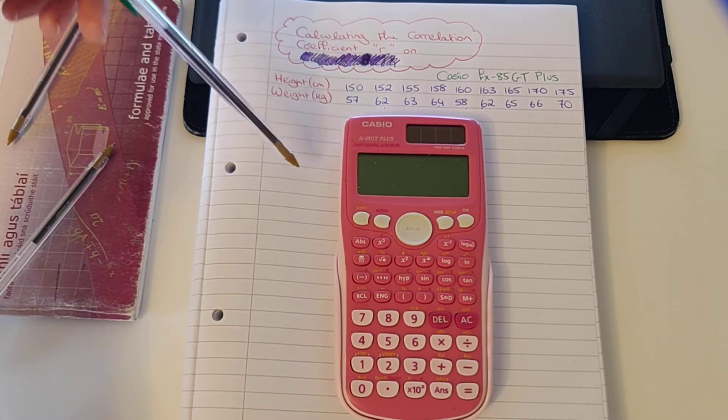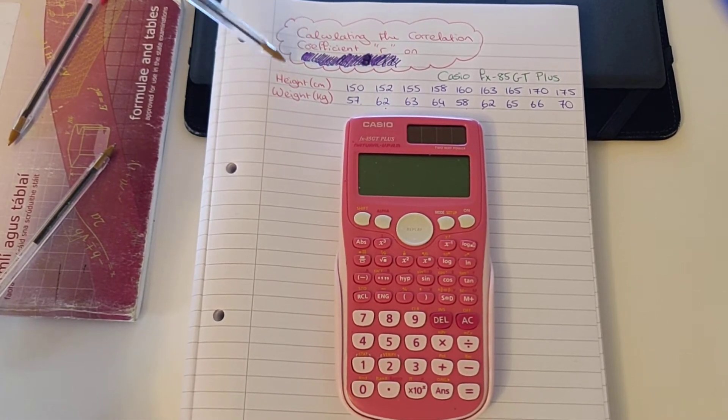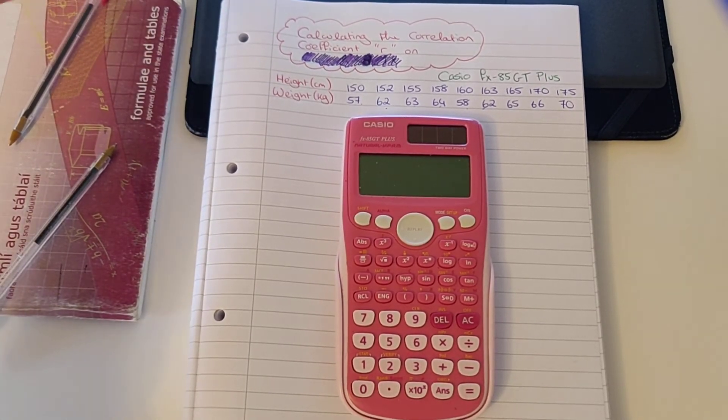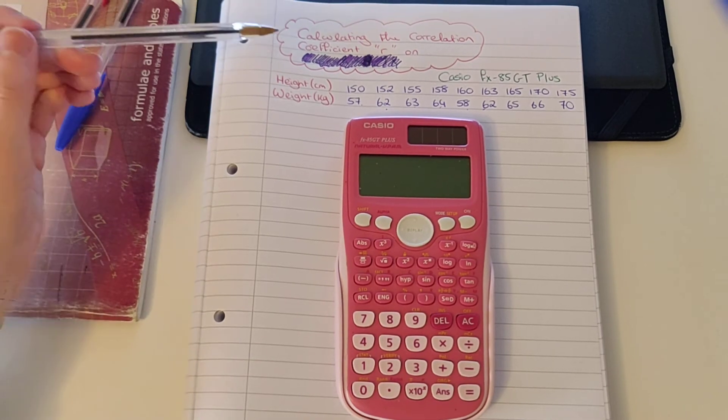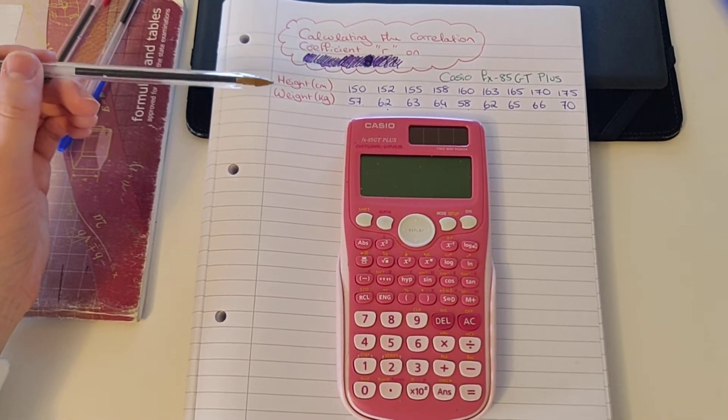So if we have this version of the calculator, we can calculate our correlation coefficient R, which represents the relationship between two pieces of bivariate data. Remember, bivariate data is two pieces of data collected together to presume a relationship between the two.